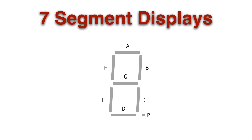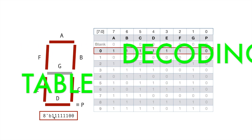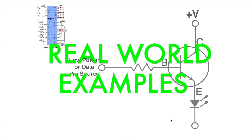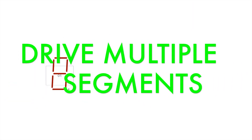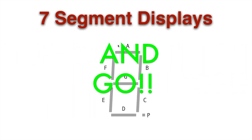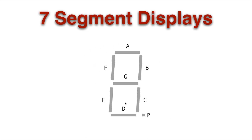Hey guys, do you want to know how a seven segment display works and how to drive it? Then you've come to the right video. So a seven segment display is aptly named because there's seven segments. And actually, most seven segment displays these days have eight segments because they include the period here — the dot — to be able to add in a period or a decimal place.